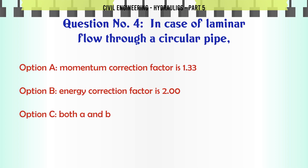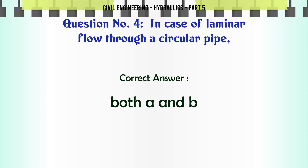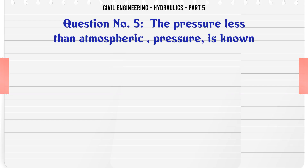In case of laminar flow through a circular pipe: a. momentum correction factor is 1.33, b. energy correction factor is 2.00, c. both a and b, d. neither a nor b. The correct answer is both a and b.